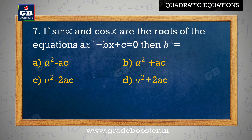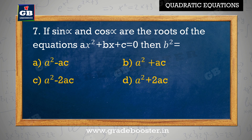If sin alpha and cos alpha are the roots of the equation ax square plus bx plus c equal to 0, then b square equal to: A. a square minus ac, B. a square plus ac, C. a square minus 2ac, D. a square plus 2ac.